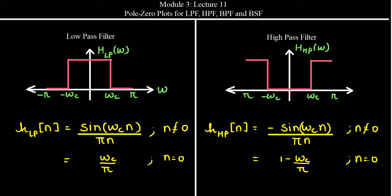Hello everyone. Welcome to another lecture of the course Digital Signal Processing. In the previous lectures, we have seen how to design various types of filters: that is low pass filter, high pass filter, band pass filter, and the band stop filter.